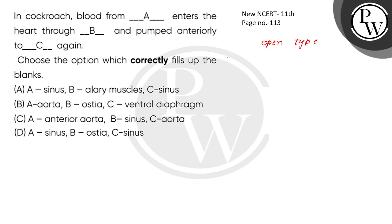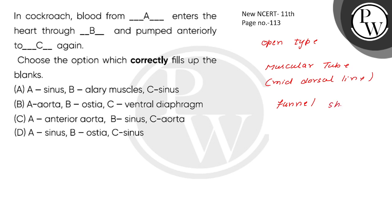Now if we talk about how the heart is structured — it is an elongated muscular tube lying along the mid-dorsal line of the thorax and abdomen, differentiated into funnel-shaped chambers.